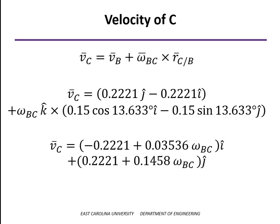In the i direction, we have the velocity of B in the i direction plus 0.03536 omega i. For j, both of those terms are positive. So there is the expression for the velocity of point C.